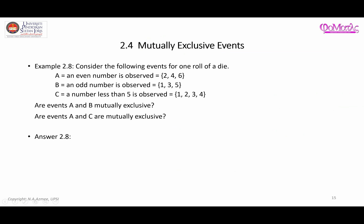Now let's look at a classic example where you roll a die and observe the number of dots. We define the following events: A is getting an even number — two, four, and six; B is getting an odd number — one, three, and five; and C is observing a number less than five — one, two, three, and four.